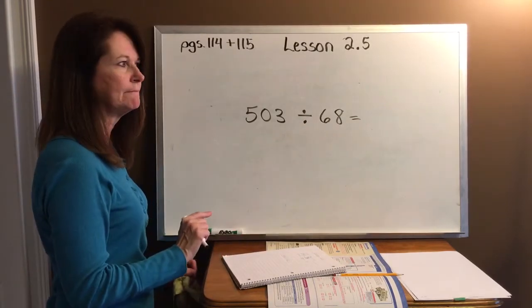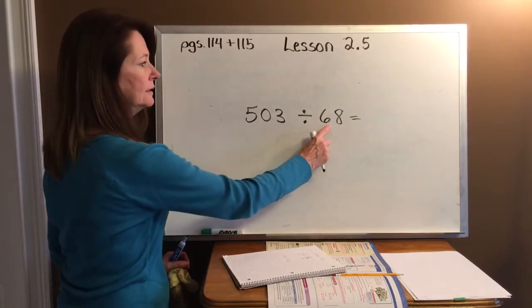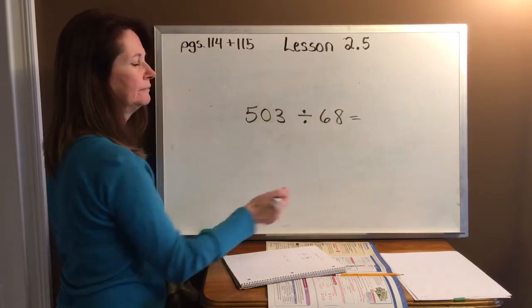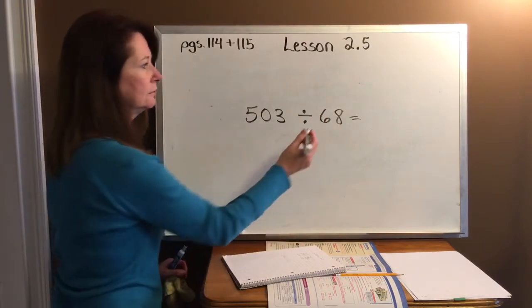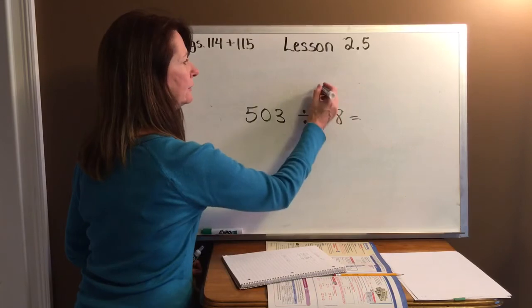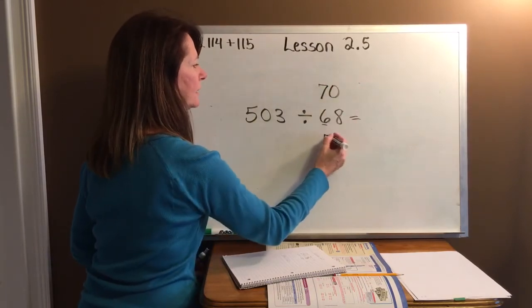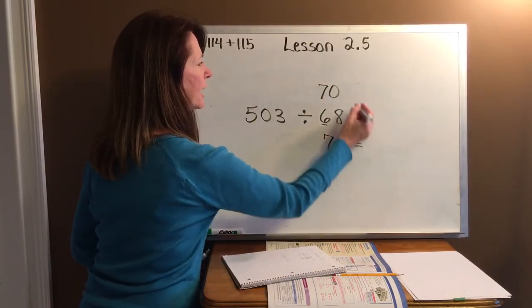All right. Estimate. Step one. Estimate. 60 or 70? 60 or 70? 70, right? Look next door. 5 or greater. All right. Here's our 70. For our low estimate and for our high estimate.